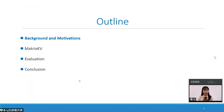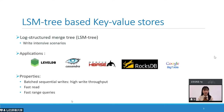I will give this talk in four parts. First, let me introduce the background and motivation. LSM tree-based KV stores are widely deployed in write-intensive scenarios. Popular KV stores such as LevelDB, Cassandra, and RocksDB are built with LSM tree, and they usually run on systems with DRAM and SSD storage.